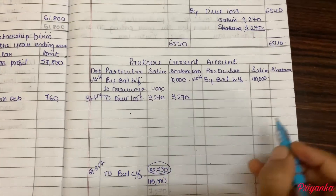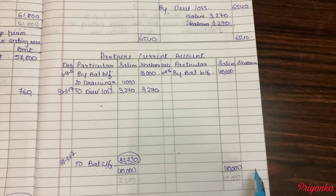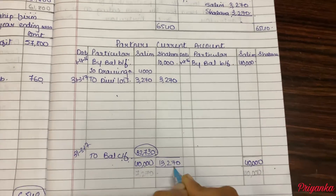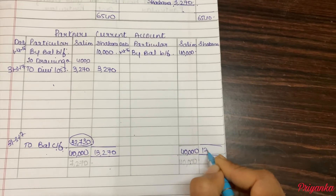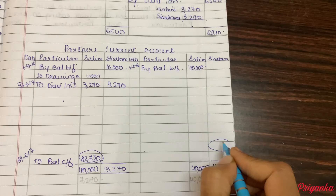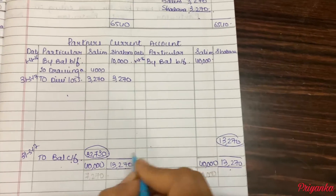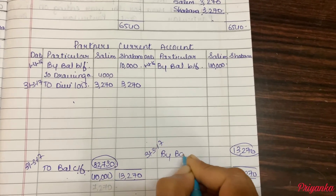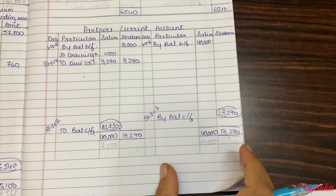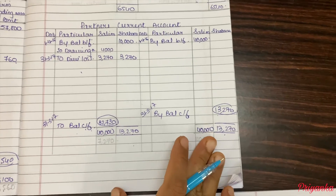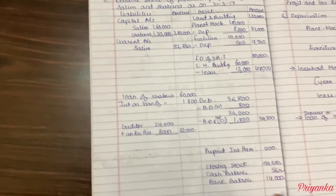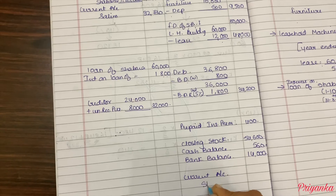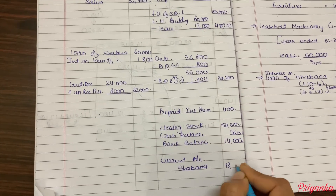Next, we will make the total for Shabana. As we can see on the credit side, there are no entries given. Only on the debit side the total will be 13,270, which is going to be the same on the credit side: 13,270. And same is going to be the closing balance, which comes on the debit side. 31st March 2017 — balance carried forward. This time it comes on the credit side, so we are going to take it in your asset side. Current account — Shabana: 13,270.